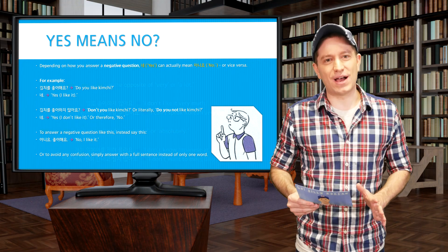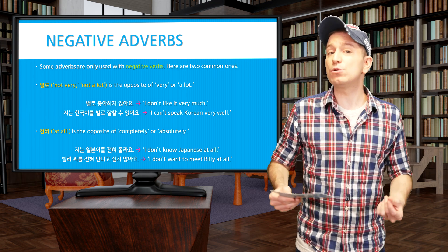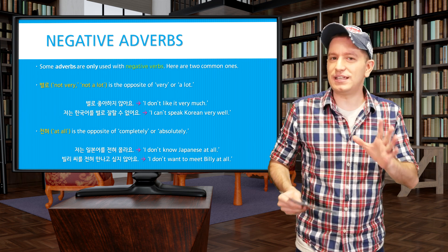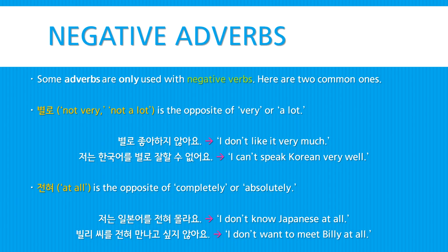There's one more thing we need to talk about: some adverbs are negative adverbs, meaning they're only used in negative sentences. Here are two of the most common. First is 별로, meaning 'not very' or 'not a lot' — the opposite of 'very' or 'a lot.' For example: 별로 좋아하지 않아요 — I don't like it very much. Or 저는 한국어를 별로 잘할 수 없어요 — I can't speak Korean very well. Next we have 전혀, meaning 'at all' — the opposite of 'completely' or 'absolutely.' For example: 저는 일본어를 전혀 몰라요 — I don't know Japanese at all. 빌리 씨를 전혀 만나고 싶지 않아요 — I don't want to meet Billy at all.